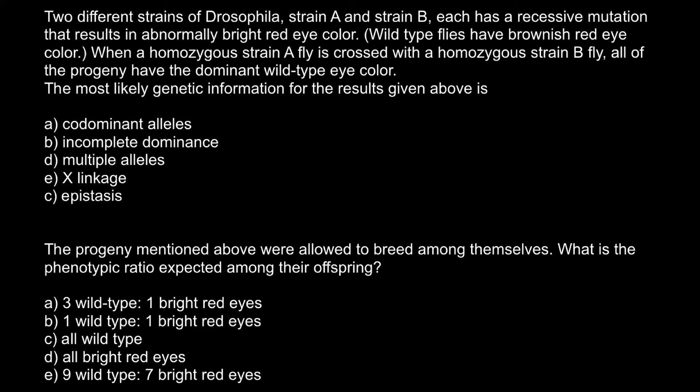Hello and welcome to Nikolai's genetics lessons. Today I have prepared two questions for you. The first problem: two different strains of Drosophila, strain A and strain B, each has a recessive mutation that results in abnormally bright red eye color. Wild type flies have brownish-red eye color. When a homozygous strain A fly is crossed with a homozygous strain B fly, all of the progeny have the dominant wild type eye color. The most likely genetic explanation for these results is...